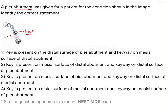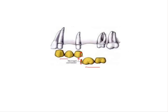In this question, they have asked about the placement of the key and keyway. The options given involve the key being present on the distal surface of the pier abutment or on the mesial surface of the distal abutment — essentially asking about location. The keyway is present on the pier abutment on its distal aspect, and the key, which is the projection, is present on the distal-most abutment on its mesial aspect.